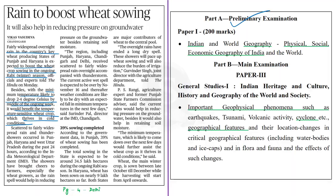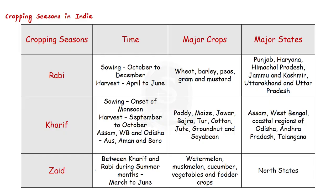India has three cropping seasons: rabi, kharif and zaid. Rabi crops are sown in winter from October to December and harvested in summer from April to June. Wheat is the second most important cereal crop and the main food crop in the northern and northwestern parts of India. It requires a cool growing season, bright sunshine at the time of ripening, and 50 to 75 centimetres of annual rainfall evenly distributed over the growing season. Other rabi crops include barley, peas, gram and mustard.